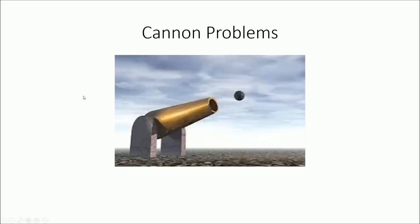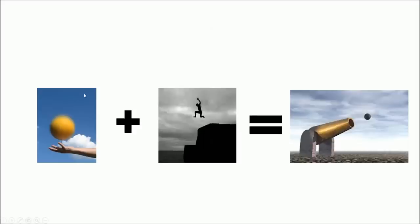Last but not least, we have cannon problems. The main difference between a cannon problem and a cliff problem is that the second half of a cannon problem is pretty much the same thing as an entire cliff problem, because the symmetry of motion, the motion on the way up all the way to the apex, is exactly equal and opposite to the second half of the motion.